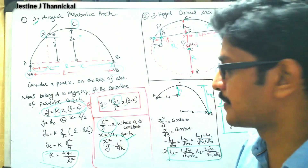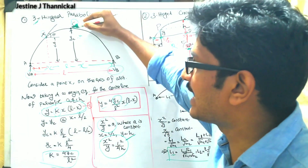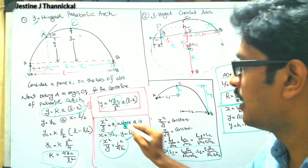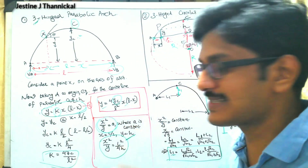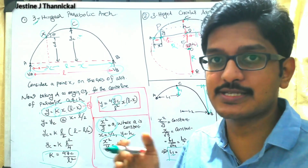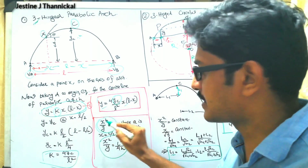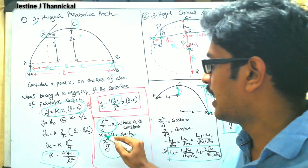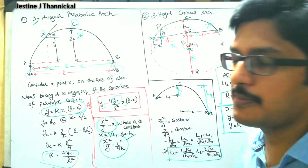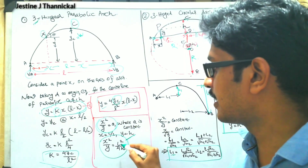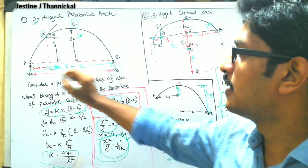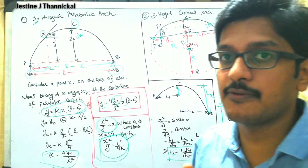Next, if we take the crown point C as our origin instead of A, we get the equation x² / y = a, where a is a constant — similar to the general parabolic form x² = 4ay. When x = l/2 and the vertical distance y becomes h, we get x² / y = l² / 4h. Please note down these equations. These apply when both A and B are at the same level.